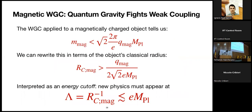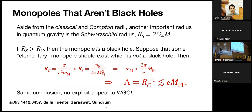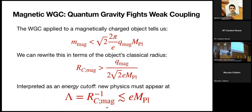Arkani-Hamed, Motl, Nicolis, and Vafa said you get something interesting by combining the magnetic WGC with this bound on the radius. If you interpret the classical radius as a cutoff where new things should appear, you learn that cutoff is smaller than the coupling times the Planck scale. If I have a gauge theory where the coupling is very small, my cutoff becomes very low — that's a powerful statement. The statement that some electrically charged particles should exist is not very powerful, but the statement that the theory breaks down below a UV cutoff is useful. It also reflects that quantum gravity doesn't have global symmetries: making e very small makes electromagnetism look like a global symmetry.